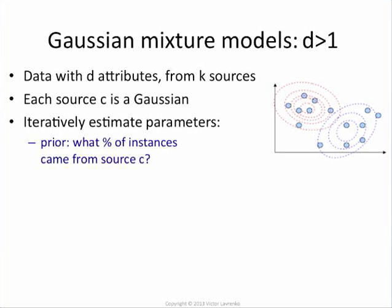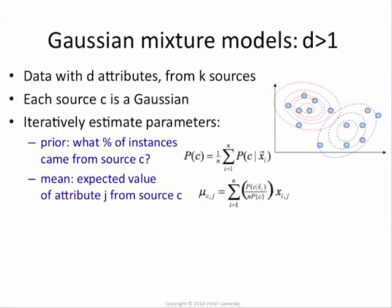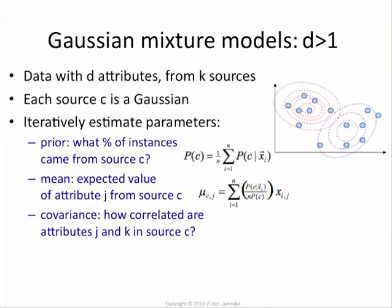Each source is still a Gaussian, and what you're doing is computing the mean. The mean vector is going to be the average of all the instance vectors weighted by the probability that that instance came from Gaussian C, from the source C. And you do it for each attribute J in your set of attributes. So that's what you do for the mean.